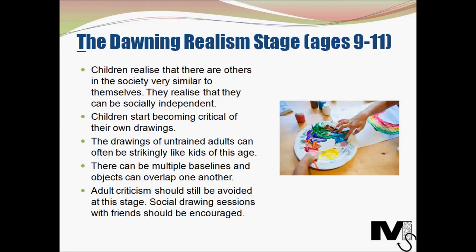In the dawning realism stage, there isn't often a single baseline but multiple ones. Objects can overlap one another, and human forms tend to have age, sex, and distinguishing characteristics. Drawings now become less spontaneous and more planned and thematic. In terms of motivation, adult criticism should still be avoided, as children are already quite critical of themselves and the inaccuracies between real objects and their drawings affect them. Social drawing sessions with friends should be encouraged, and children should be free to choose their own theme or adapt one used by another child — with minimal adult intervention.